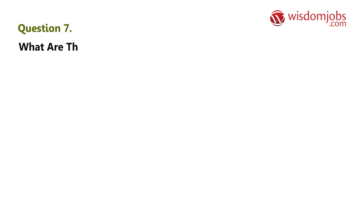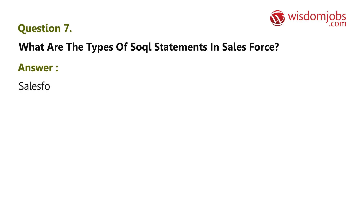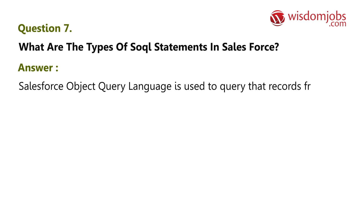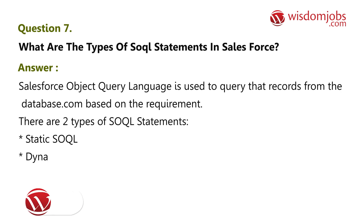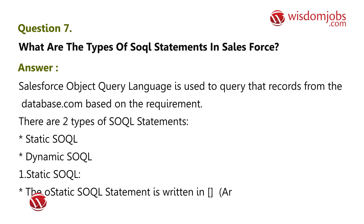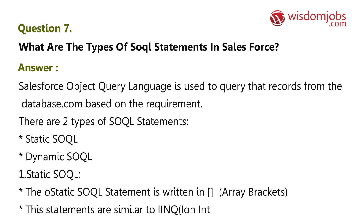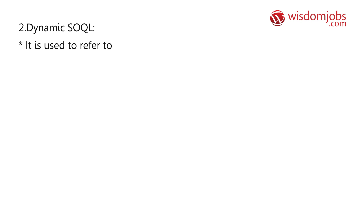Question 7: What are the types of SOQL statements in Salesforce? Answer: Salesforce Object Query Language is used to query records from the database.com based on the requirement. There are two types of SOQL statements: static SOQL and dynamic SOQL. Static SOQL statements are written in array brackets and are similar to LINQ (integrated query).